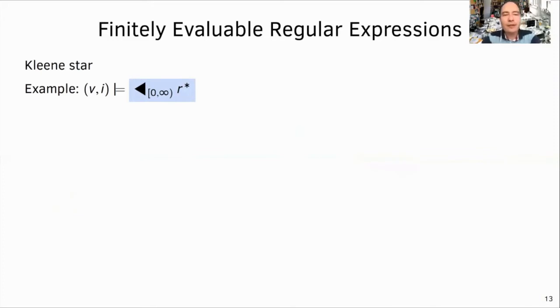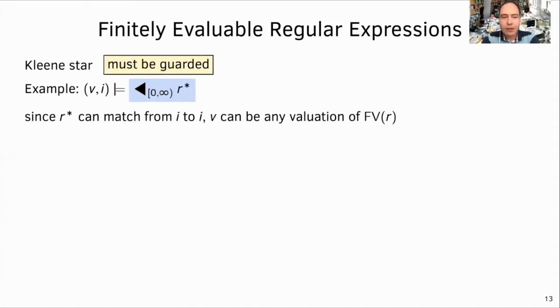So first, let's consider valuations v at position i in the log of a past match operator with top-level Kleene star regular expression. Since Kleene star always matches an empty pattern, i.e. it matches from position i to position i again, the valuation of three variables that satisfy this formula are any. So any valuations of three variables of r are valuations that satisfy this overall formula. Hence, in this case, the corresponding table of valuations for the formula is infinite. And like in the case of negation that we saw previously, Kleene star must be guarded.